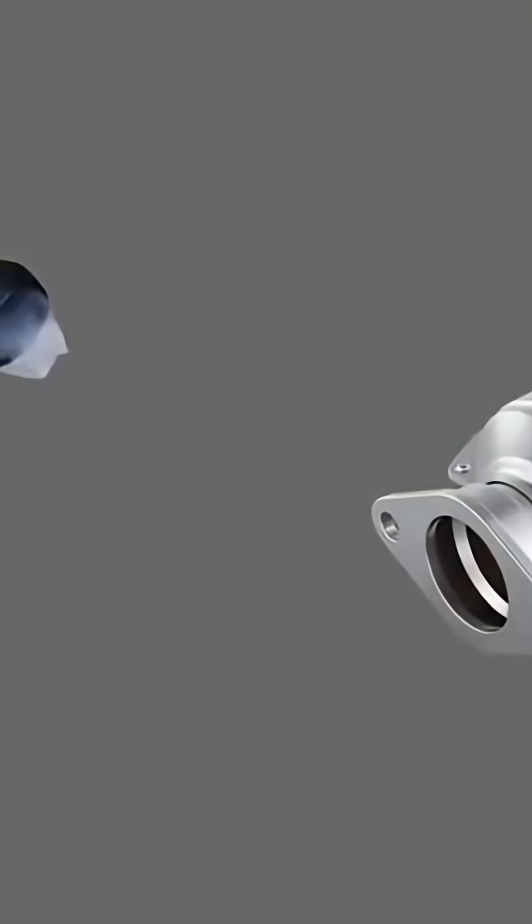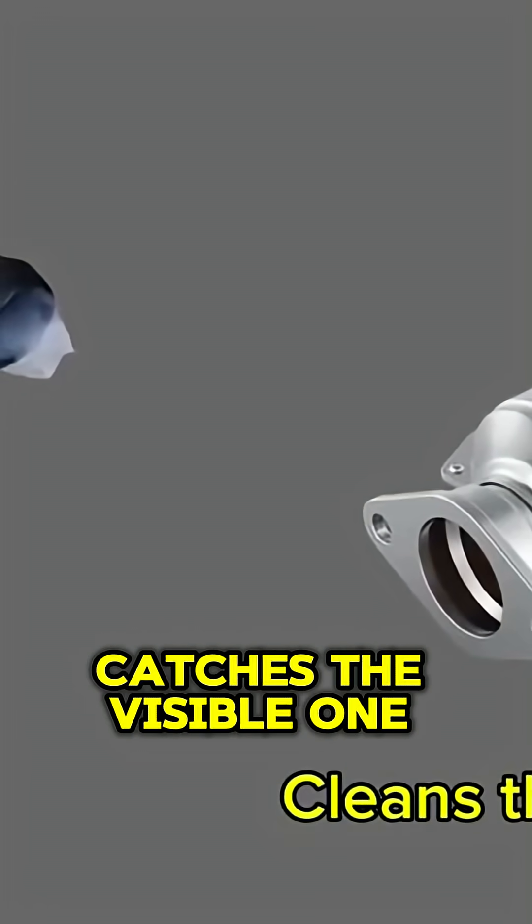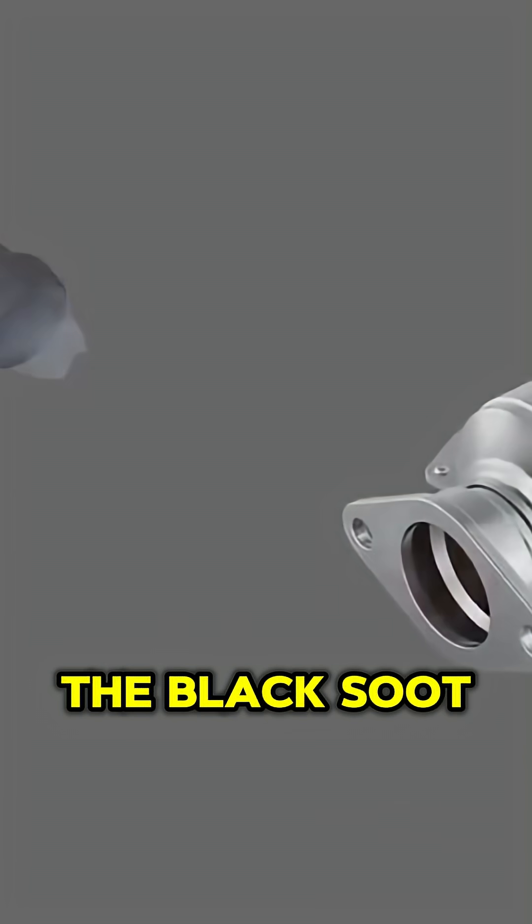Think of it this way. The catalytic converter cleans the invisible pollution, while the DPF catches the visible one. The black soot you can actually see.